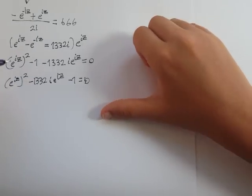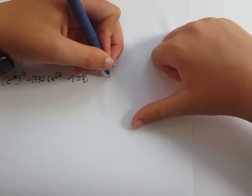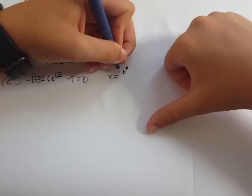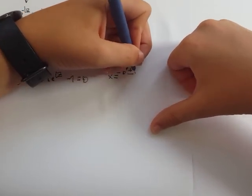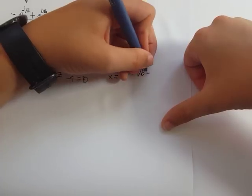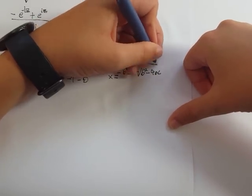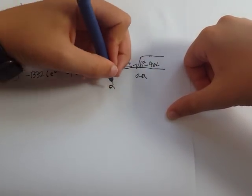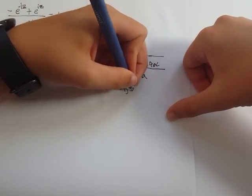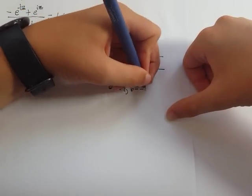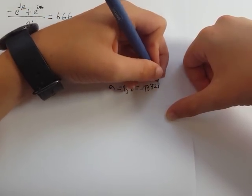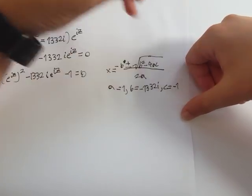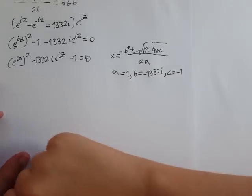This is a quadratic equation, so we can use the quadratic formula: x equals negative b plus or minus square root of b squared minus 4ac over 2a. In this case a equals 1, b equals negative 1332i, and c equals negative 1.